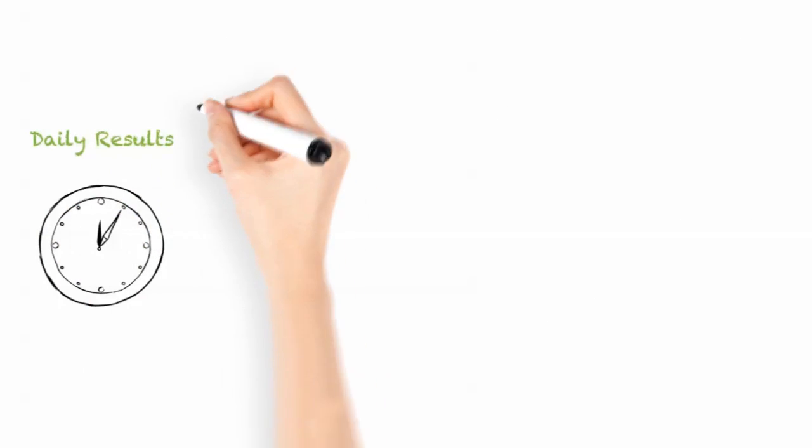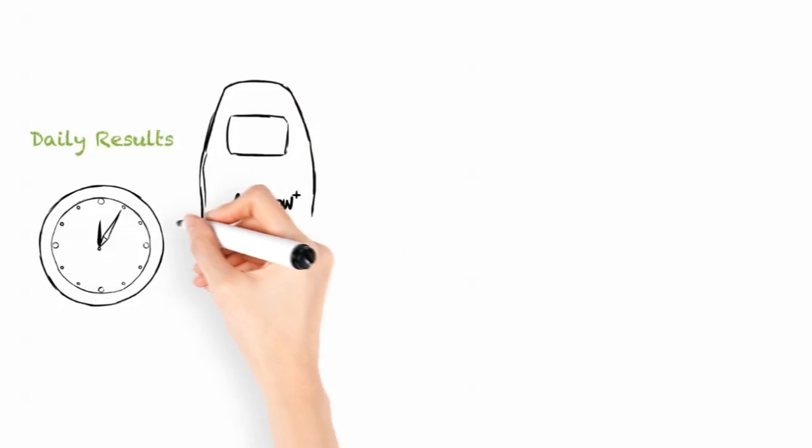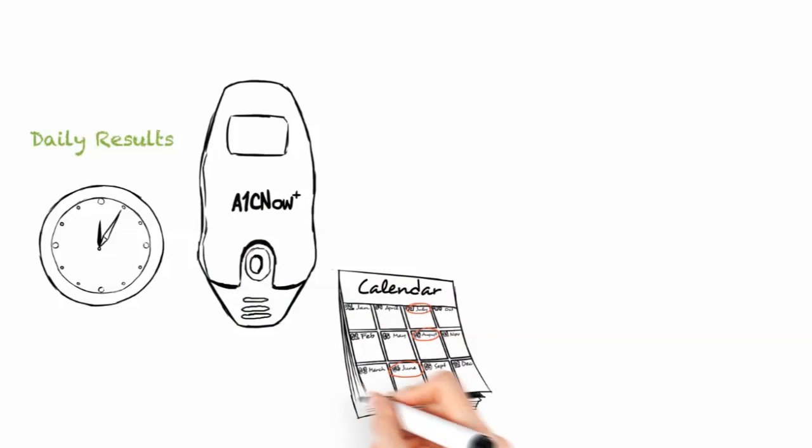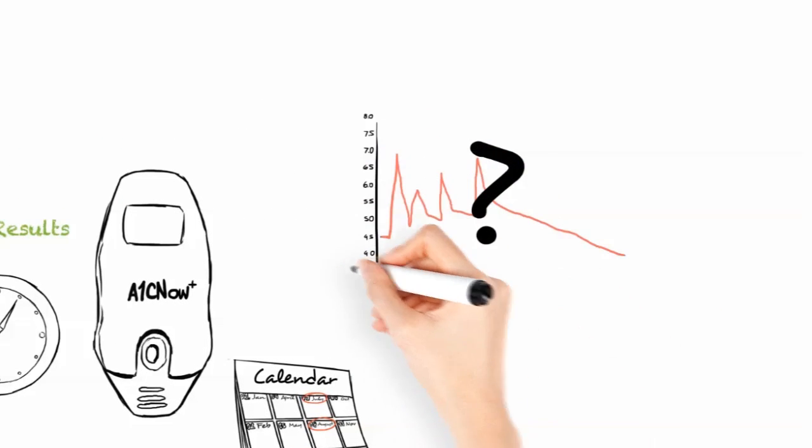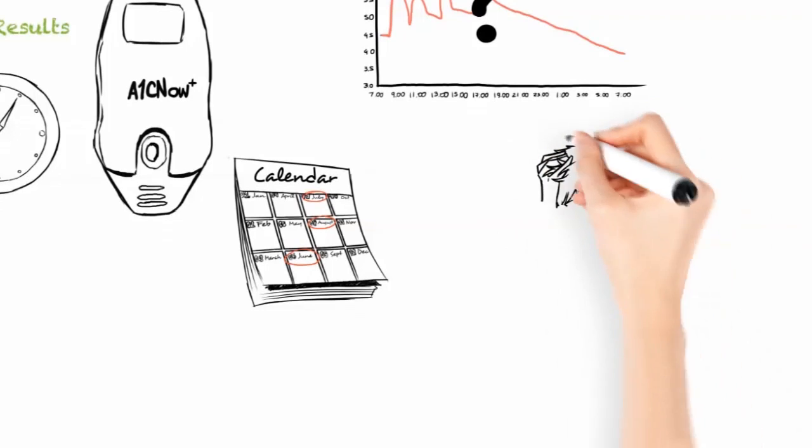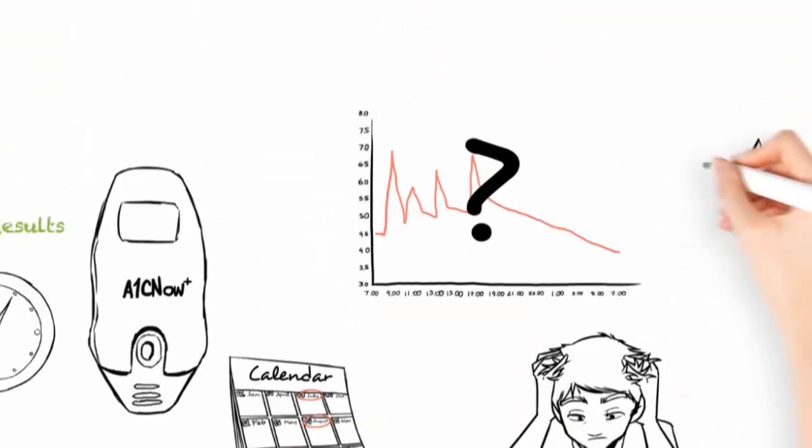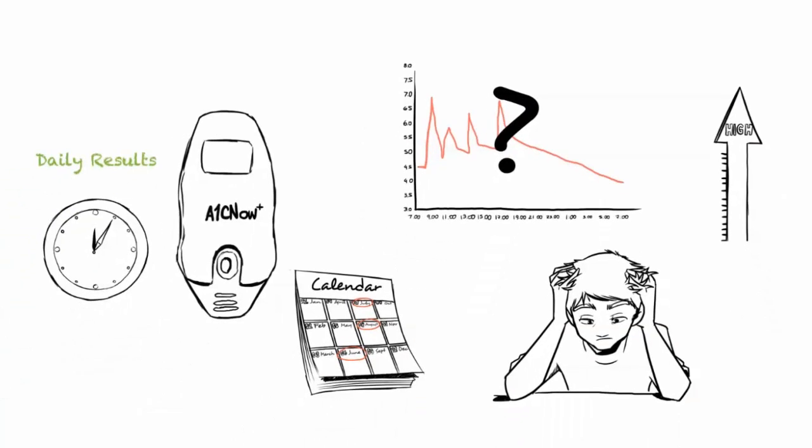By using the A1c Now Plus test kit, you will be able to manage your diabetes by measuring both your daily glucose levels and your average glucose levels over a 90-day period. No more worries about how you can accurately monitor and manage your blood sugar levels. No more getting caught off guard with glucose spikes, which leave you worrying about how such spikes could further affect your condition.